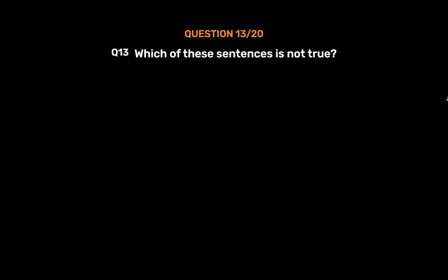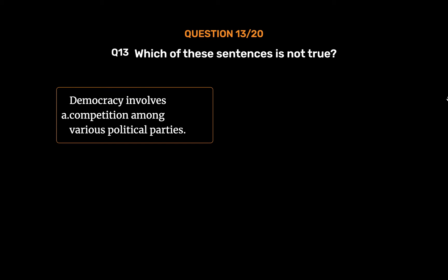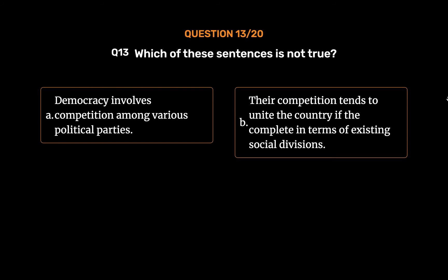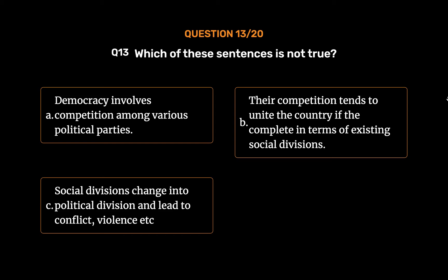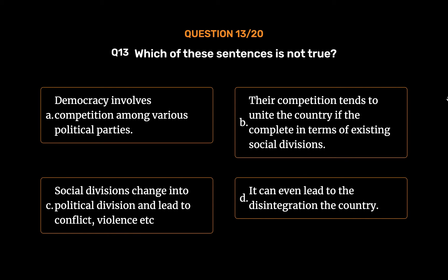Question number 13. Which of these sentences is not true? Option A: Democracy involves competition among various political parties. Option B: Their competition tends to unite the country if they compete in terms of existing social divisions. Option C: Social divisions change into political divisions and lead to conflict, violence, etc. Option D: It can even lead to the disintegration of the country.